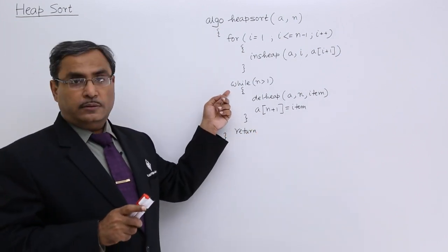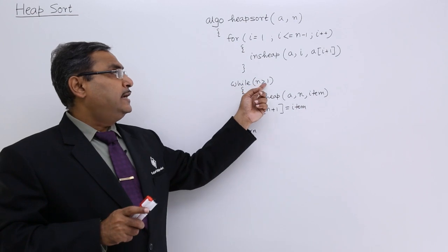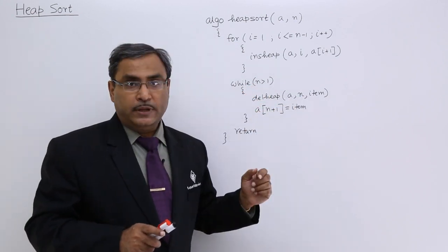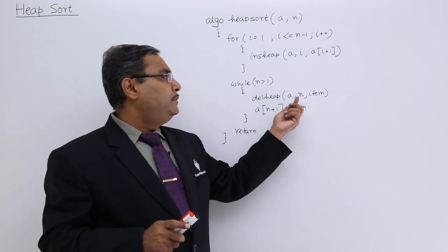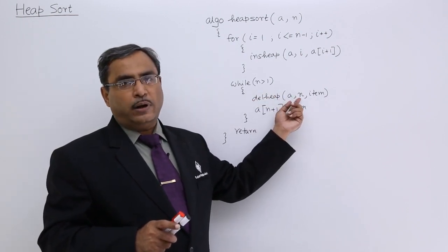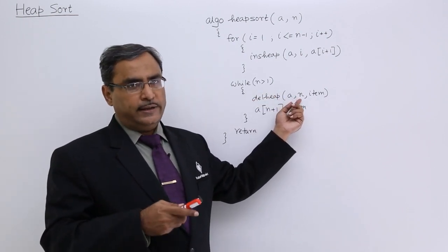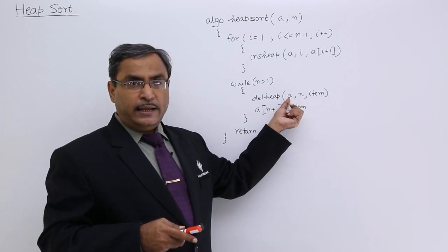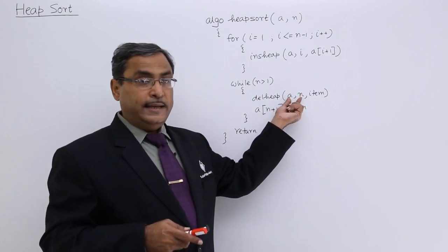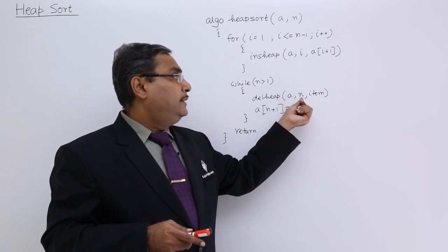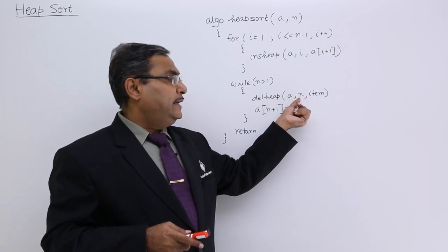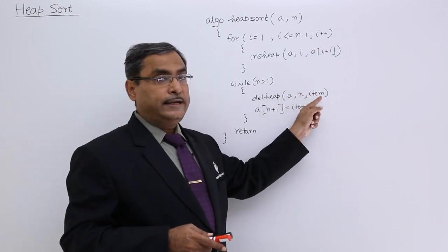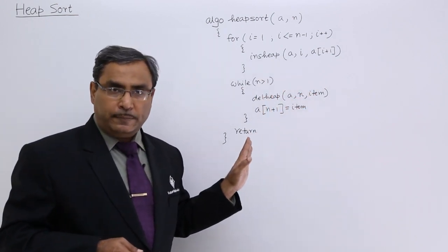Now coming to the loop body: if n is greater than 1, then DelHIP(A, n, item) is called. You know that in DelHIP, the value of n will be decreased by 1. A is the name of the array, up to n locations the heap tree was formed. After deletion, n will be decreased by 1, and the root node value will go into item. Then re-heaping will take place.